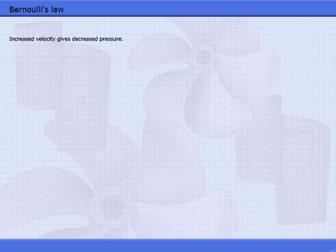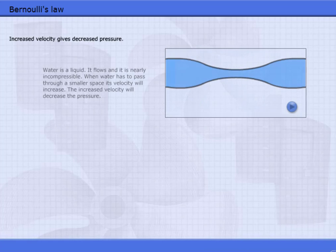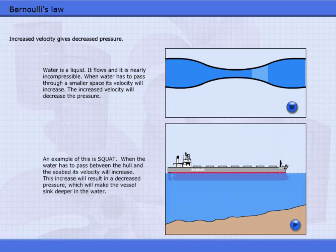Increased velocity gives decreased pressure. Water is a liquid. It flows and it is nearly incompressible. When water has to pass through a smaller space, its velocity will increase. The increased velocity will decrease the pressure. An example of this is squat.